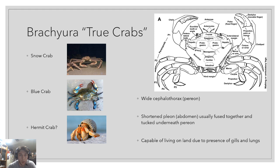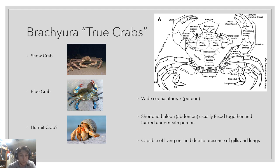Brachyura characteristics include a wide cephalothorax — that's the head-casket portion of the crab, also known as the pereon — and the shortened pleon, or abdomen, which is the tail of crabs. You would see it in a creature like a lobster, which has the long segmented tail, but in crabs they're fused together and tucked underneath the pereon.